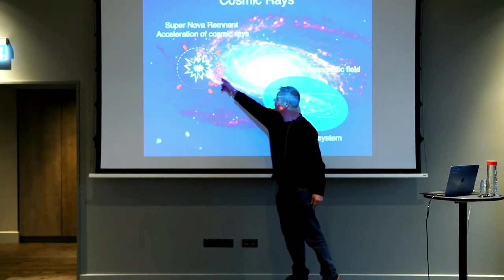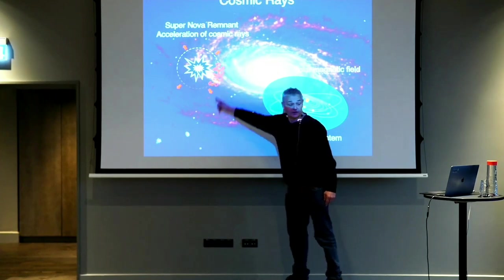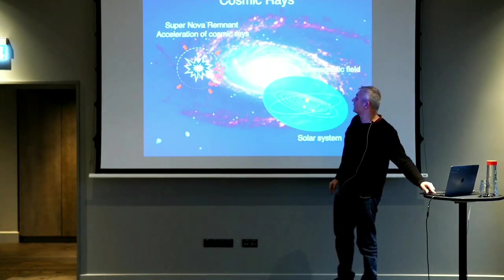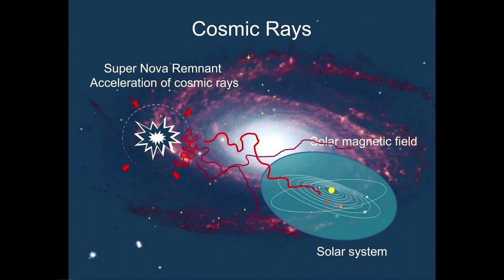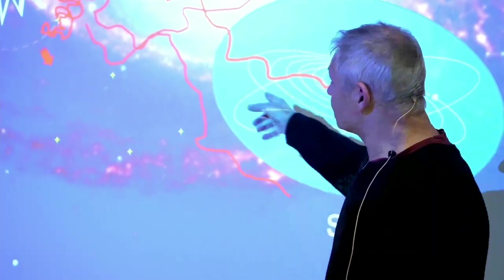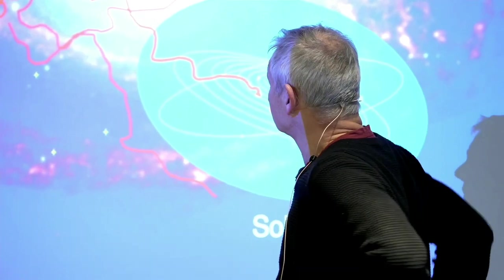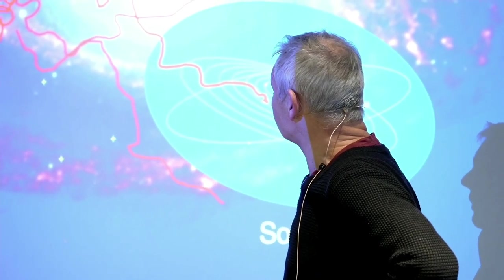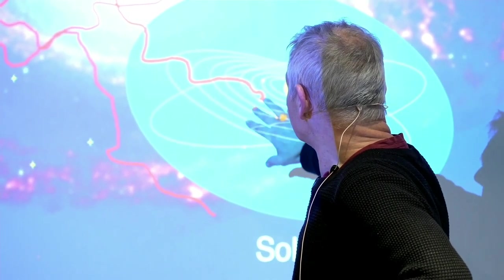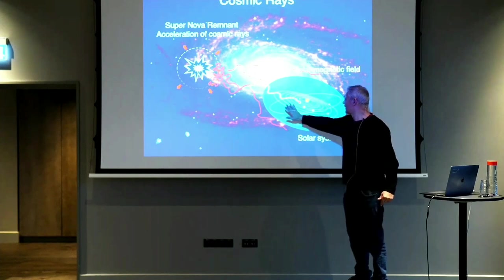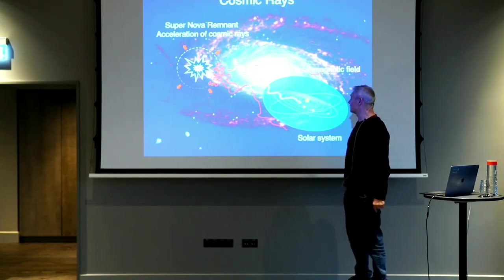What happens is that you accelerate particles along the shock front. Some of these particles, after a little while, escape and move in between the stars. Some of them will actually end up in our solar system. These particles are protons — the most common element — from hydrogen. When they enter our solar system, they have to go through the sun's magnetic field, which is called the heliosphere.